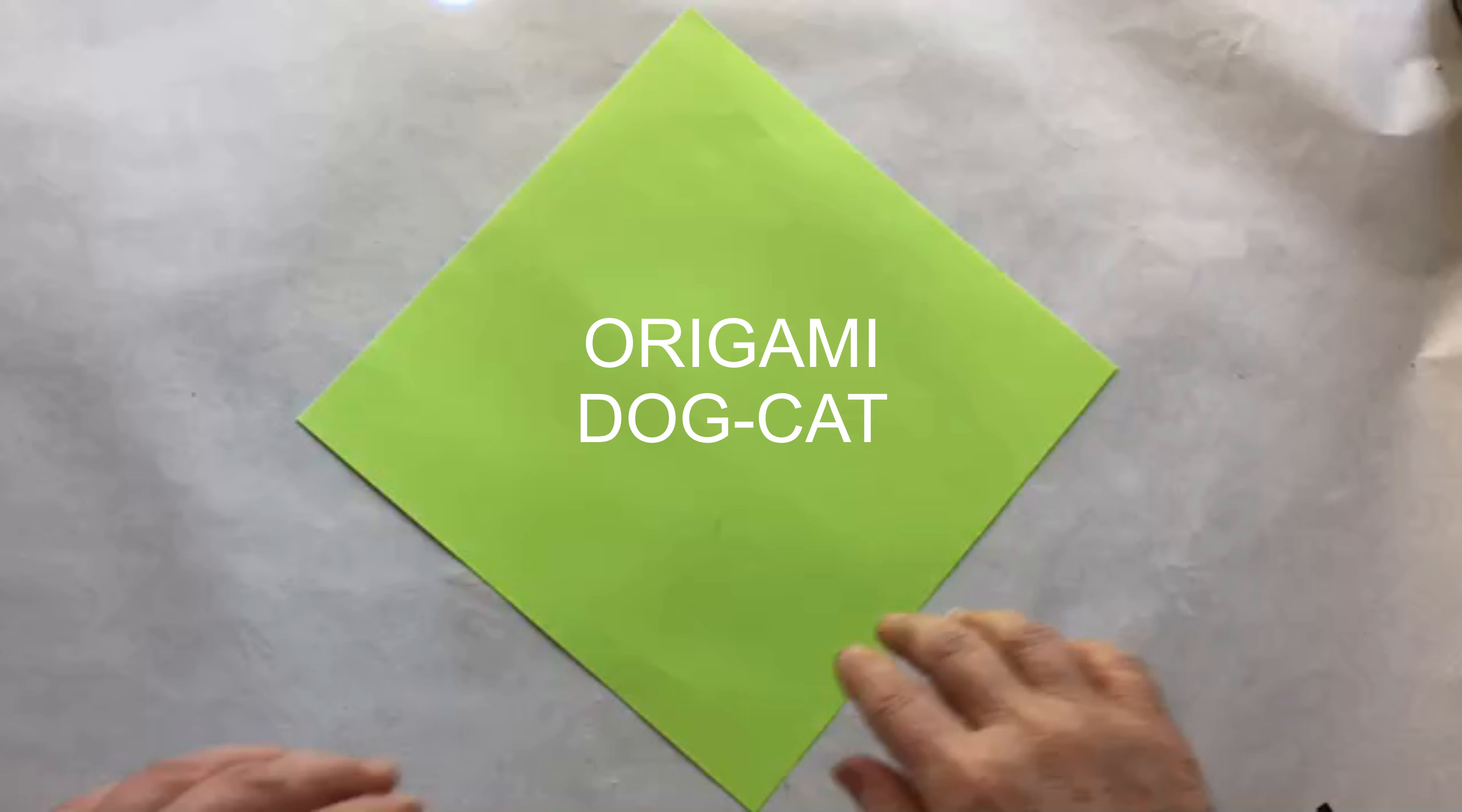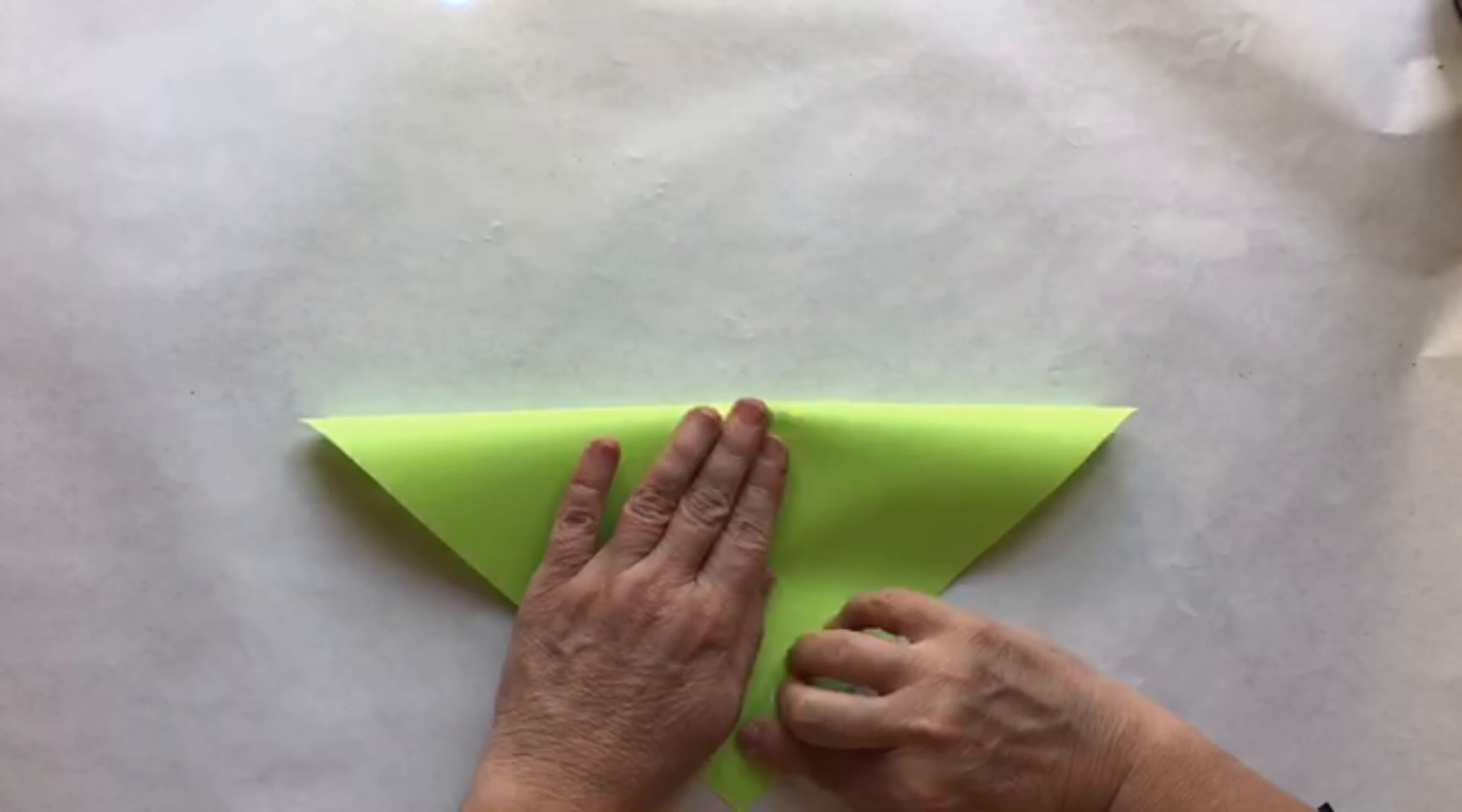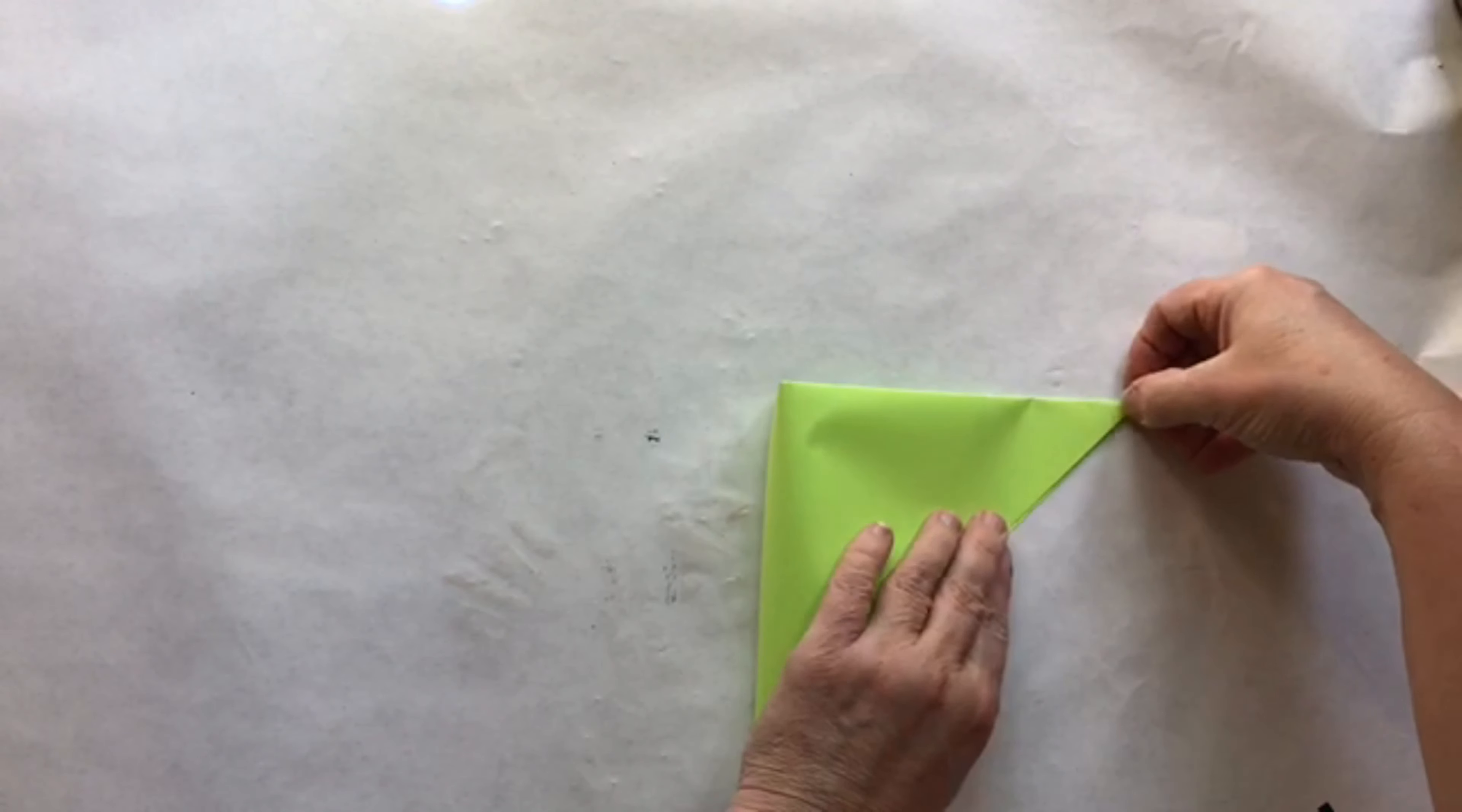You'll need one sheet of eight and a half by eleven copy paper cut down to eight and a half by eight and a half square. Start by turning the paper so that it is a diamond shape. Take the top and fold it to the bottom to make a triangle. Next, pull the left side over to the right side and give the top a little crease.